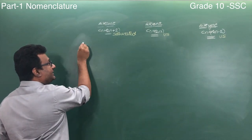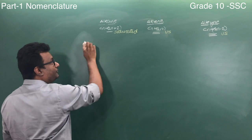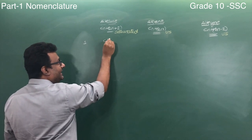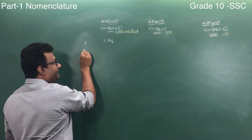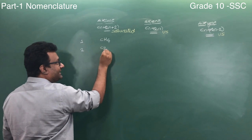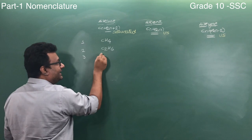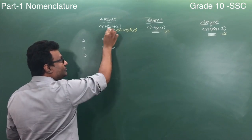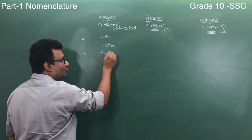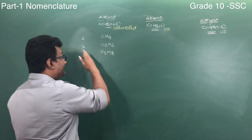What happens when n equals 1 in this formula? You put 1 over here, I will get CH4. When I put n equals 2, I will get C2H6. When n equals 3, it is C3H8.